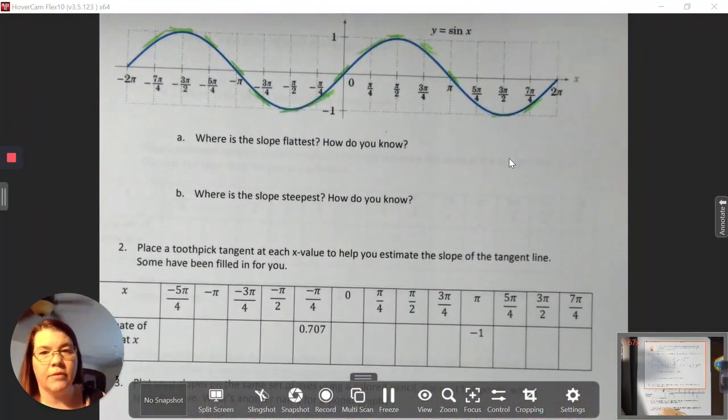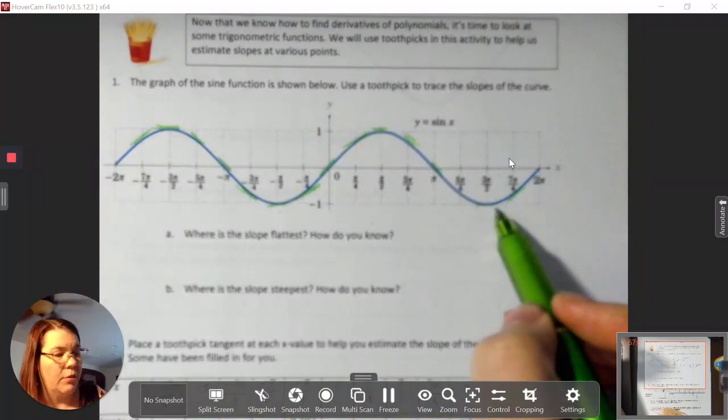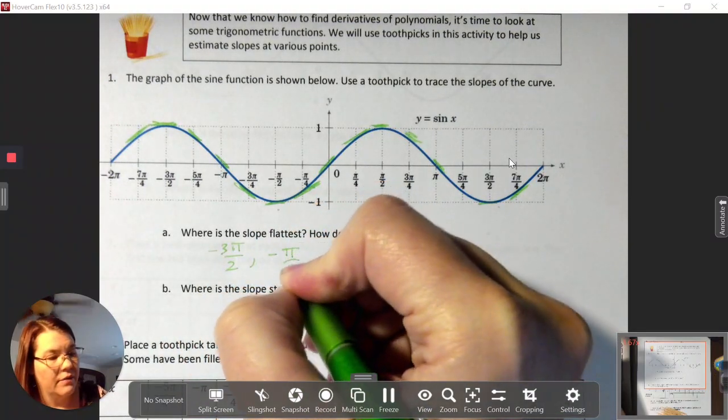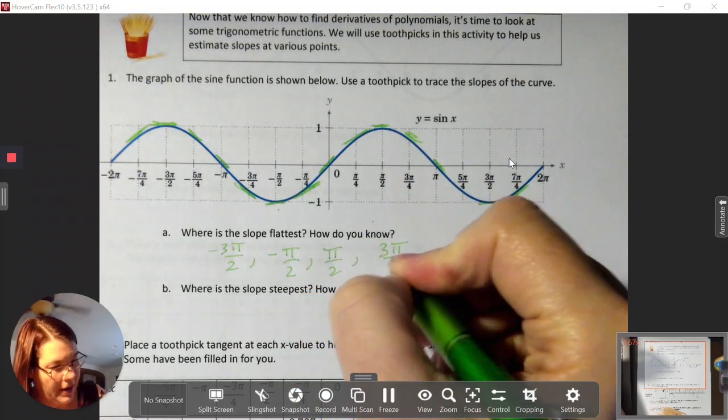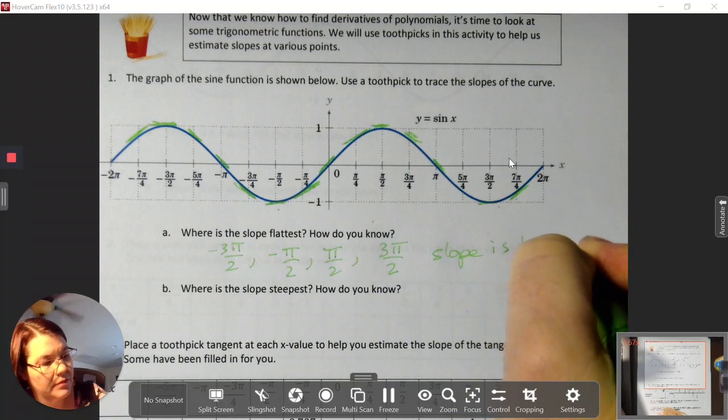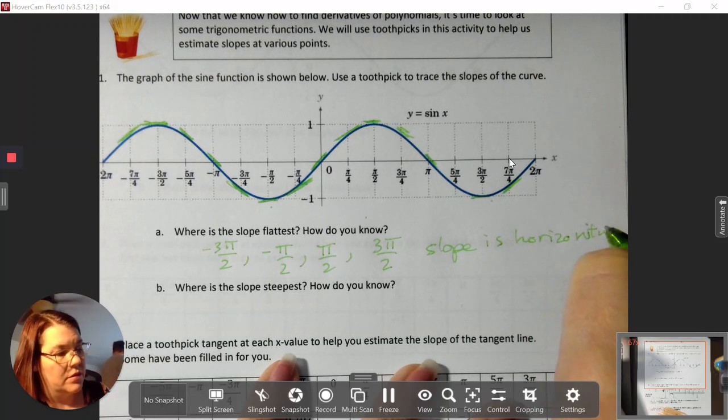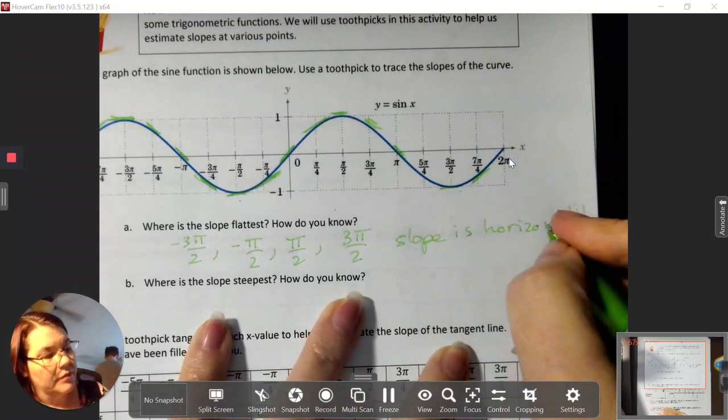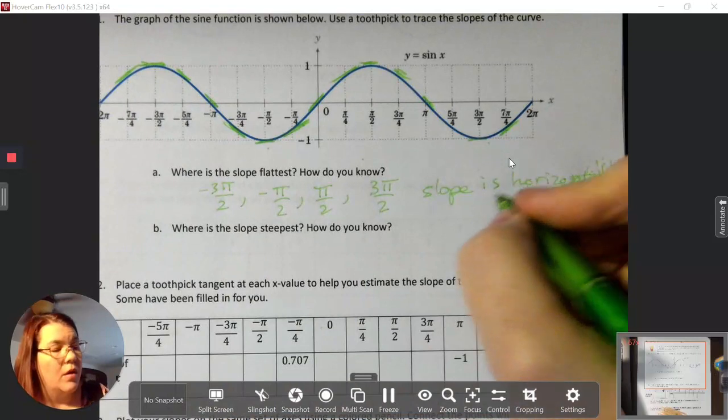Estimate the slope at these values. Where's the slope the flattest? That would be at pi halves, negative pi halves, negative 3 pi halves, and positive 3 pi halves. So, slope is zero, horizontal.